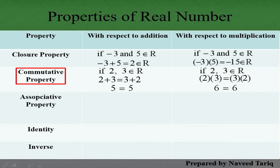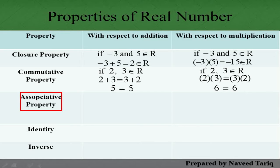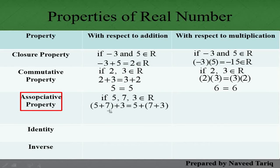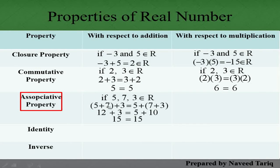اب Associative Property کی بات کریں گے۔ Commutative میں place change کرتے تھے، لیکن یہاں grouping change کریں گے۔ ہمارے پاس 3 numbers لیتے ہیں: 5, 7, اور 3۔ پہلے (5 plus 7) plus 3 = 12 plus 3 = 15، اور دوسرے grouping میں 5 plus (7 plus 3) = 5 plus 10 = 15۔ Group change کرنے سے answer میں کوئی فرق نہیں پڑا — یہ Associative Property ہے۔